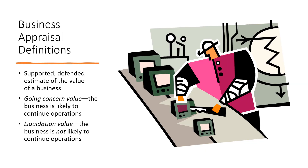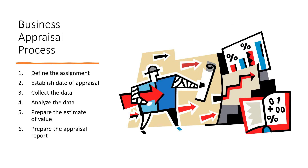Business appraisal is defined as a supported, defended estimate of the value of a business. Going concern value means the business is likely to continue operations. Liquidation value means the business is not likely to continue operations. The business appraisal process involves: define the assignment, estimate the date of appraisal, collect data, analyze the data, prepare the estimate of value, and prepare the appraisal report.